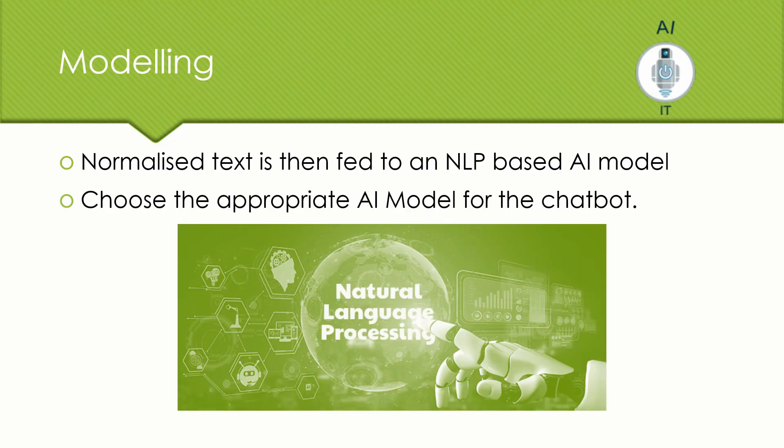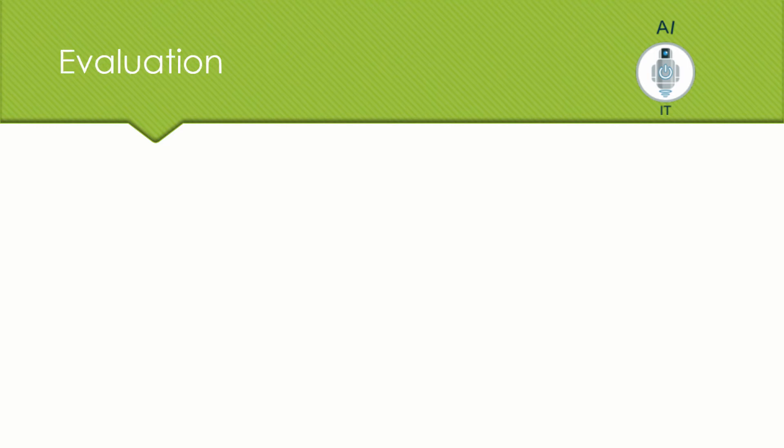In the next stage, that is the modeling stage, the normalized text which is the output of data exploration stage is fed into an AI model. Depending on what type of chat we are going to make, we are going to choose the respective AI model that is going to serve as the base for our project. And once modeling is done, we move on to the fifth stage, the evaluation stage.